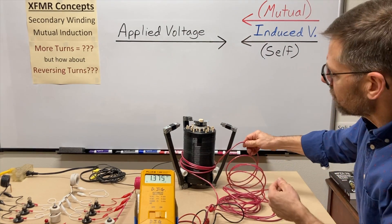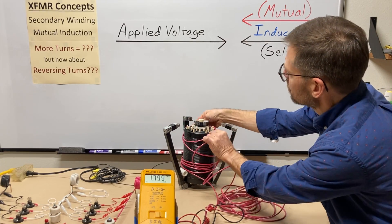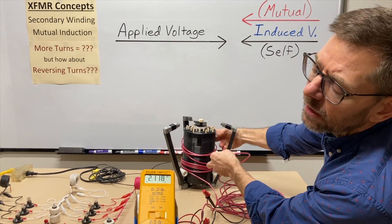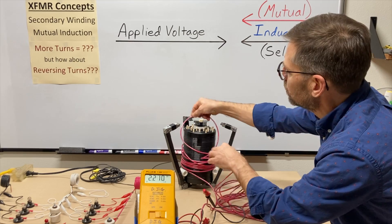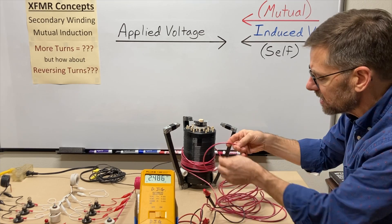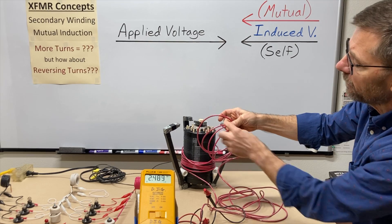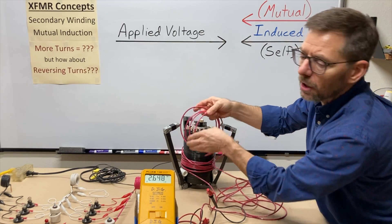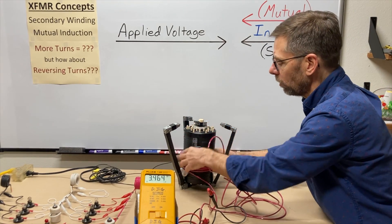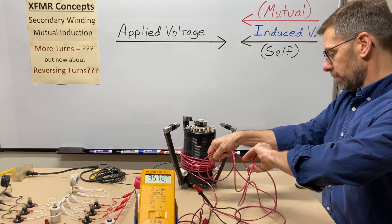So we have a voltage, but what happens if I add more turns? The voltage is increasing — 1.9, 2.22, about two and a half. It's about a quarter volt per turn. So if I put four more loops on there at a quarter volt per turn, that should be about another volt — we'd expect to get to about three and a half. Sure enough, three and a half.